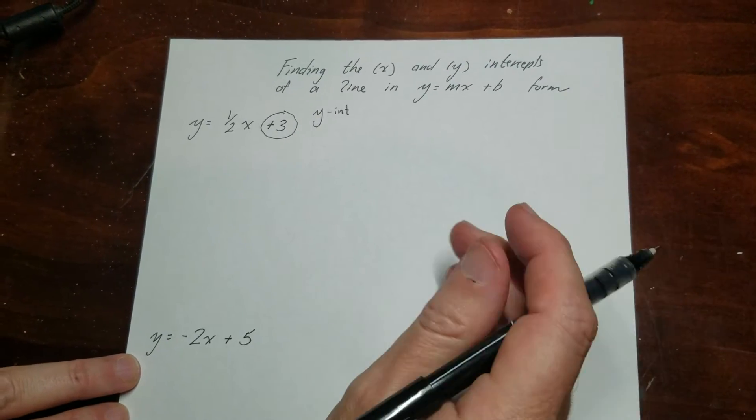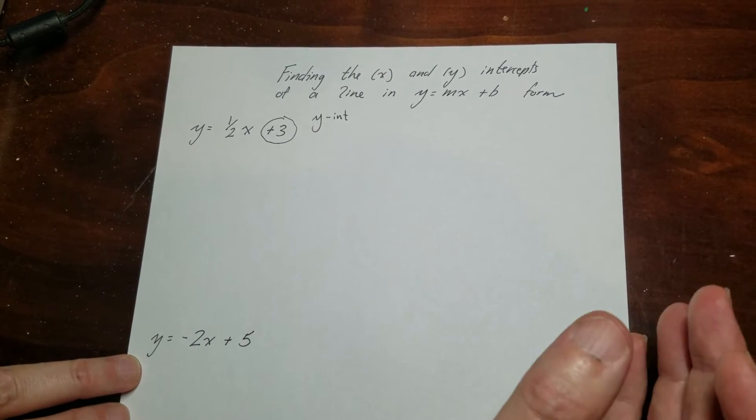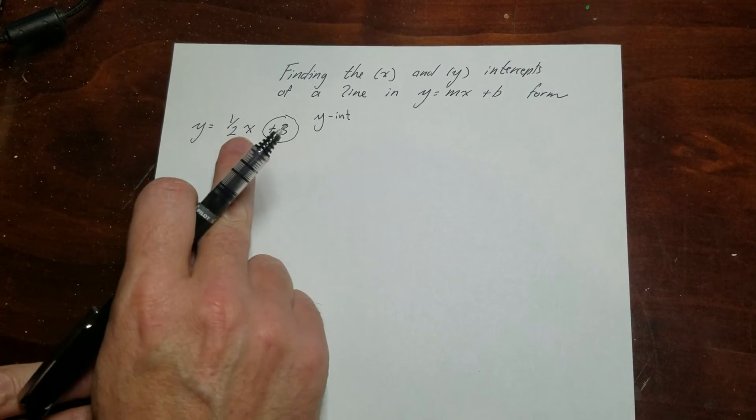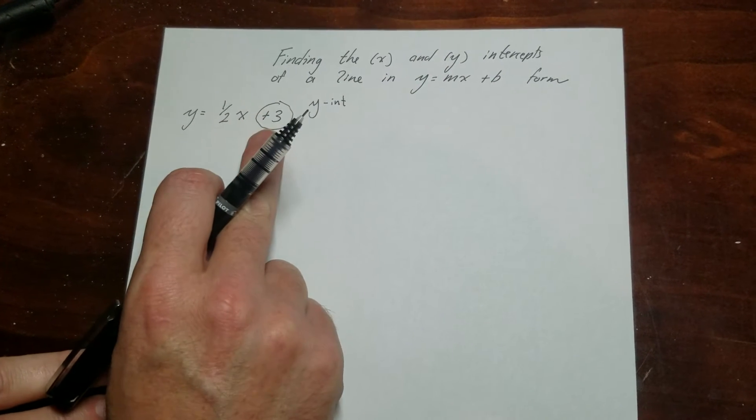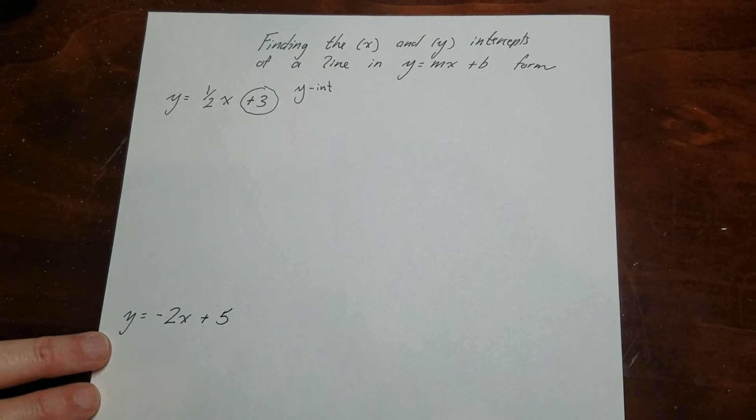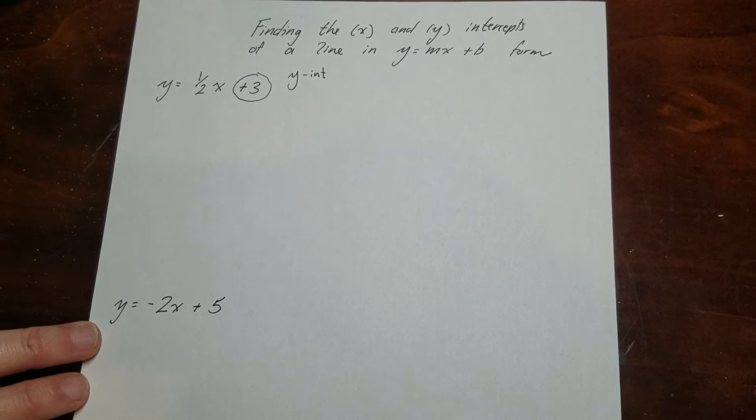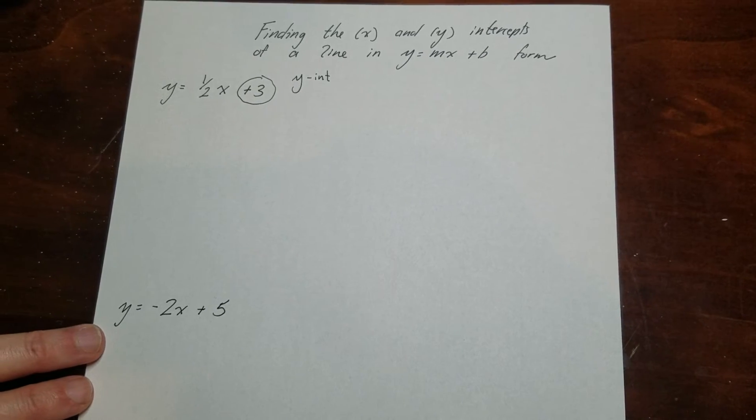So usually on other videos, when it talks about finding the intercept, what it means is in order to find the y, you make x into 0. Well, the reason why you can just say it's 3 is if I make x zero, I'd have 1 half times 0, which is nothing. So I'm left with just 3. That's why on these types of rules, when it's in this form, you can just look at the y-intercept.